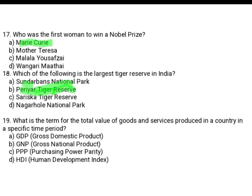What is the term for the total value of goods and services produced in a country in a specific time period? Option A: GDP. Option B: GNP. Option C: PPP. Option D: HDI. The correct answer is Option A, GDP — Gross Domestic Product.